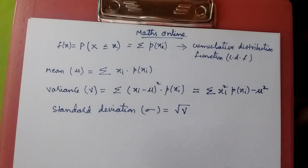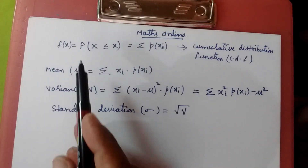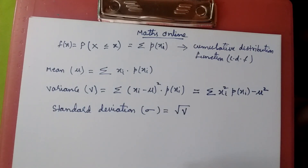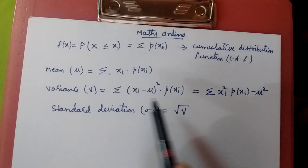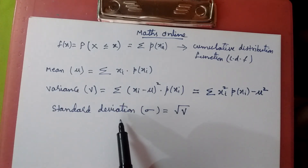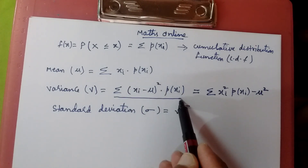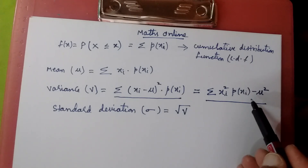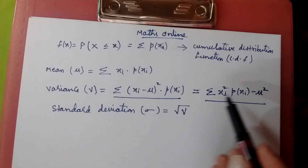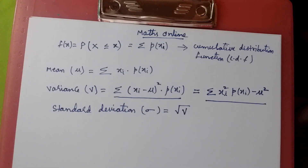Hello, I am Syed on MassOnline. In the last class we were dealing with random variables, and I gave you the definition of random variables and a few formulas — mean, variance, and standard deviation. Variance has two results; you can write variance as summation of xi squared times p of xi minus mu squared. We use these results depending upon what type of question is given to us.